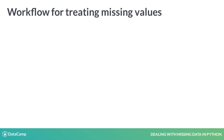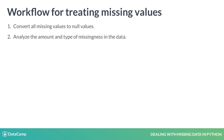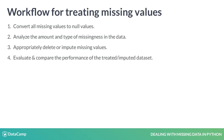To be concise, the workflow for dealing with missing data is: detect and convert all missing values to null values, analyze the amount and type of missingness, delete or impute them accordingly, and finally choose the best imputation method by evaluating their performance.